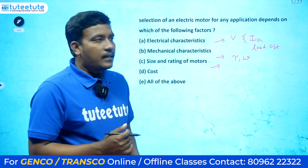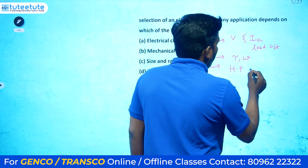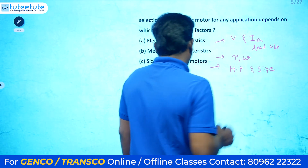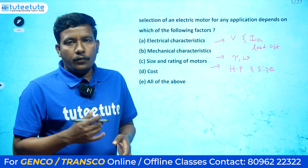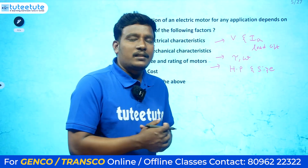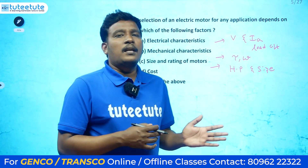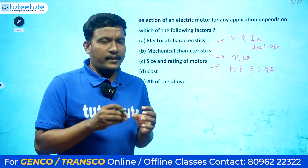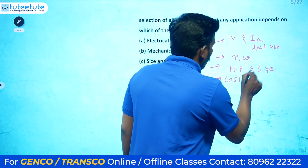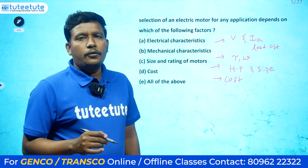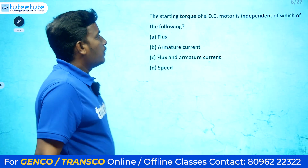Third is size and rating of the motor — the rating depends on the load, and the size depends on available space. For less space, AC motors are preferred over DC motors — you consider the horsepower (HP) value and size requirement. Fourth is cost — for industrial applications, production cost should be minimized. So the answer is all of the above.